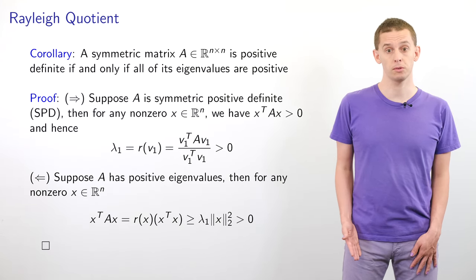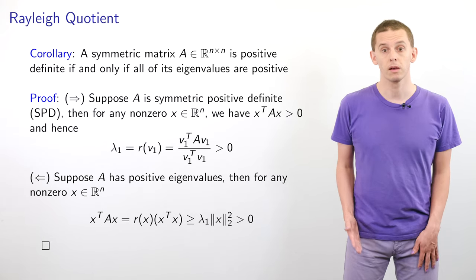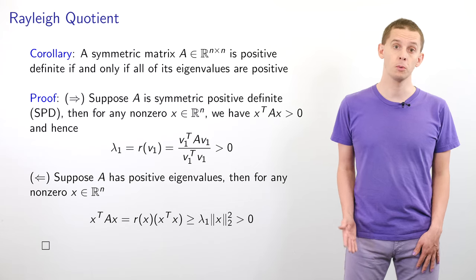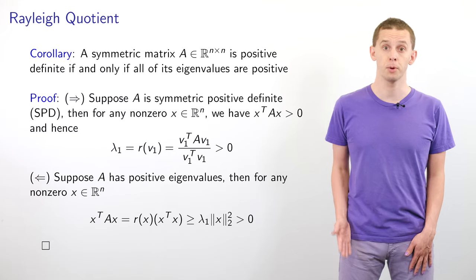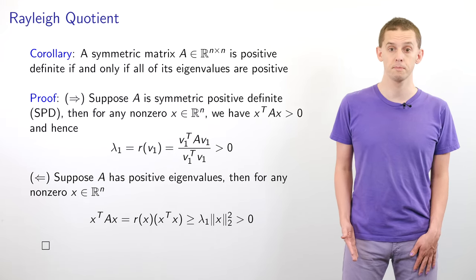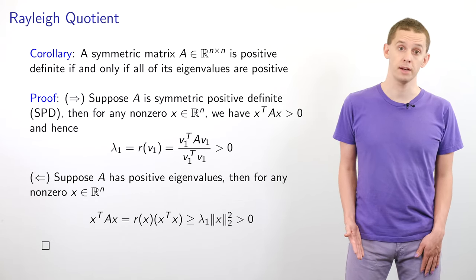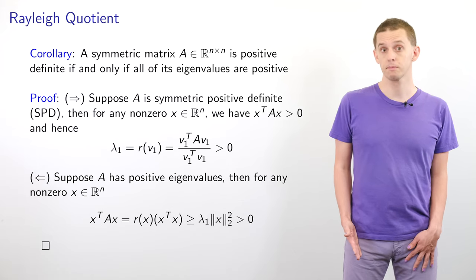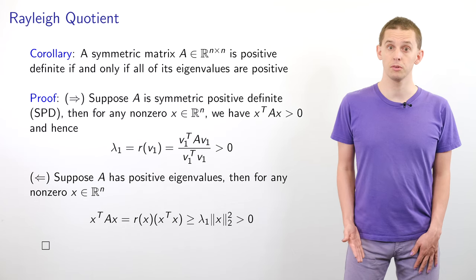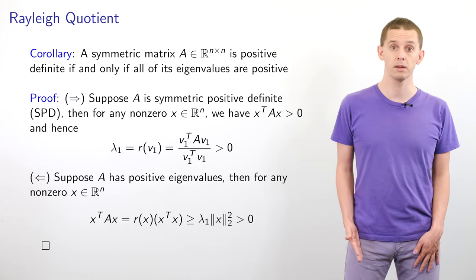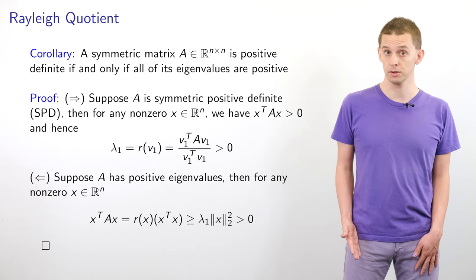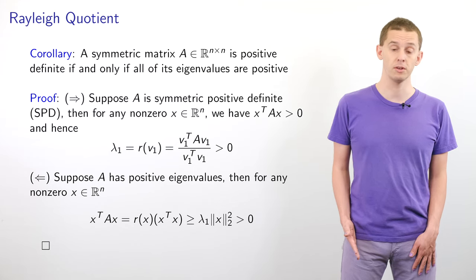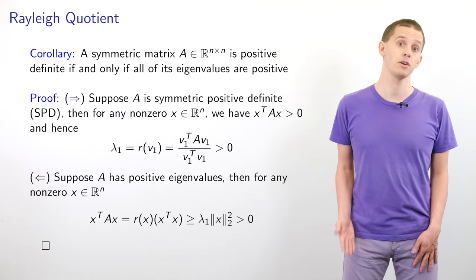Let's look at a corollary. A symmetric matrix A is positive definite if and only if all of its eigenvalues are positive. For the forward direction, suppose A is symmetric positive definite (SPD). Then for any non-zero vector x, x transpose Ax is greater than 0. Looking at lambda 1, which equals R(v1), we have v1 transpose Av1 divided by v1 transpose v1. The numerator is greater than 0 by the SPD definition, and the denominator is greater than 0 for a non-zero vector, so lambda 1 is greater than 0, meaning all eigenvalues are positive.